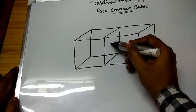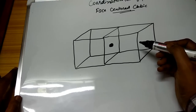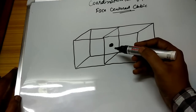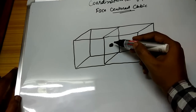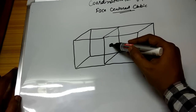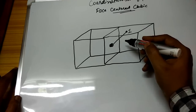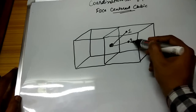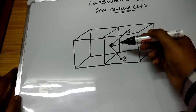Here is the central atom, and it is surrounded by a specific number of other atoms. The nearest neighbors for this central atom will be: this surface, number one; this back surface, number two; this down surface, number three.